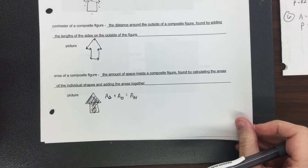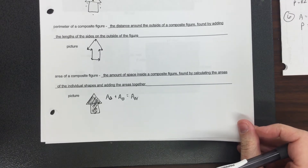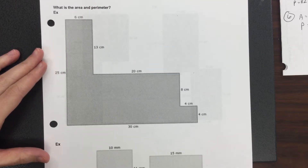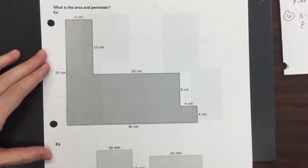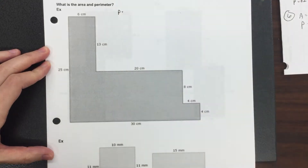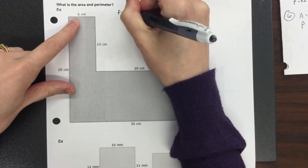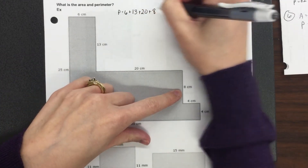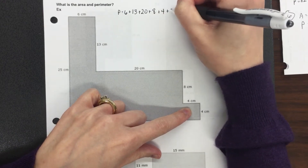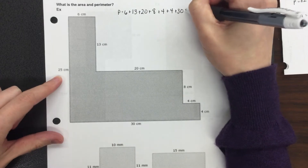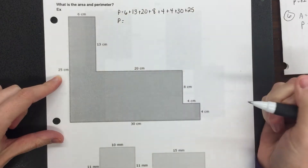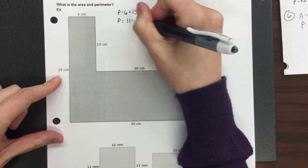There are lots of different ways you could see these. You could see them in the coordinate plane, or you could see them as independent 2D shapes. Finding the perimeter for these isn't too bad — remember perimeter means all the sides added together. So you take the sides: 6 plus 13 plus 20 plus 8 plus 4 plus 4 plus 30 plus 25, and you add those all together. In this case, the perimeter is equal to 110 units.